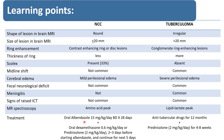For treatment: in NCC, we start albendazole 15 mg per kg per day divided in BD doses for 28 days. Steroids should be started at least 2 to 3 days before starting albendazole — either dexamethasone 0.6 mg per kg per day or prednisolone 2 mg per kg per day orally, 2 to 3 days before starting albendazole, and continued for the next 5 days. In tuberculoma, we give anti-tubercular drugs (AKT) for 12 months with prednisolone 2 mg per kg per day for 4 to 8 weeks.